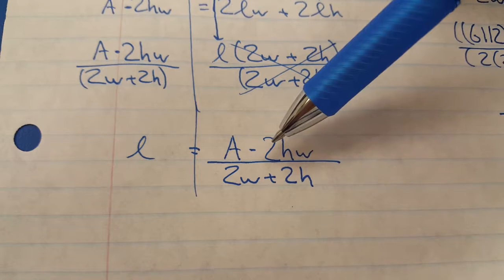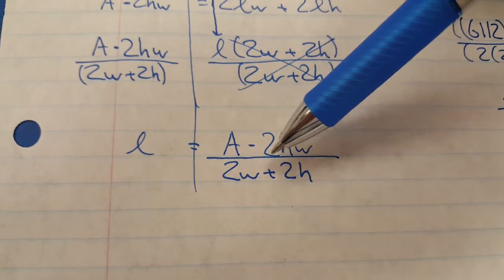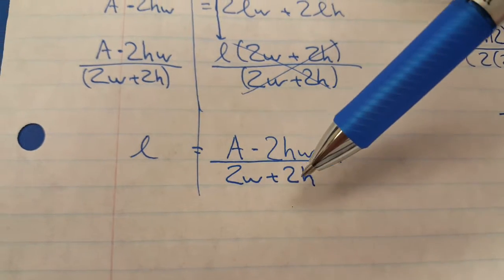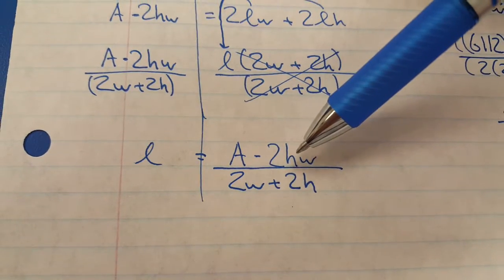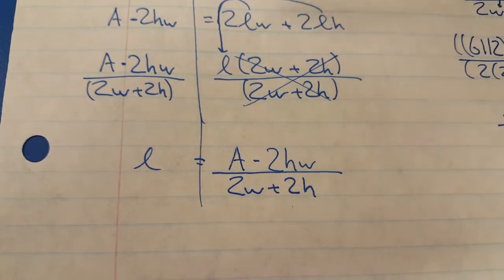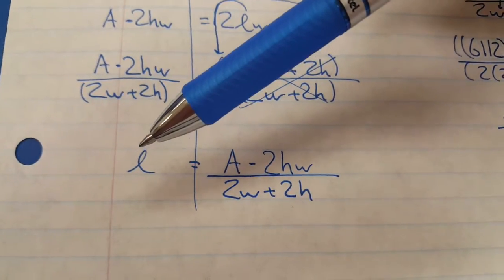L is going to equal A minus 2HW all divided by 2W plus 2H. Now again, remember most of these variables can be interchanged. This could be a WH, the H could be here and the W could be here. But this is going to be the formula that's going to get you the length if you had the area, the height, and the width.